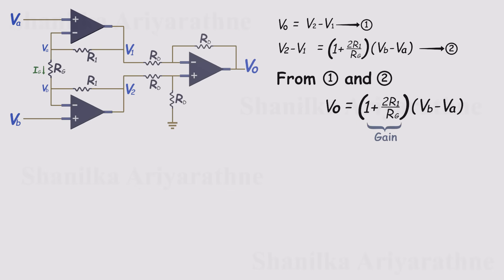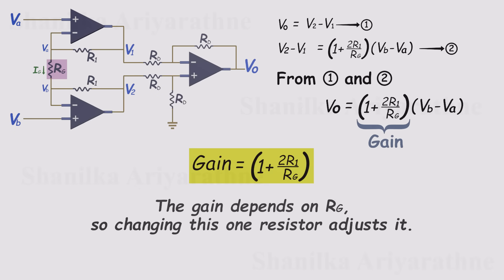And here's the key point. The gain depends directly on RG. By changing just this one resistor, we can easily adjust the gain. In fact, the overall differential gain of the instrumentation amplifier is simply the gain from stage 1 multiplied by the gain from stage 2.